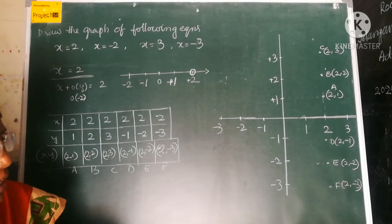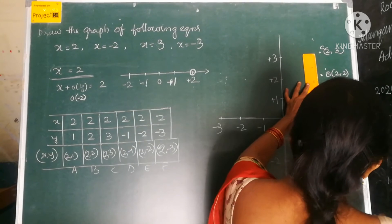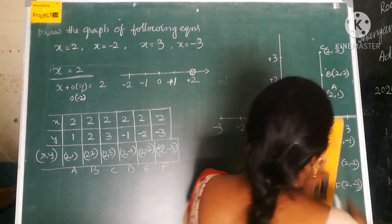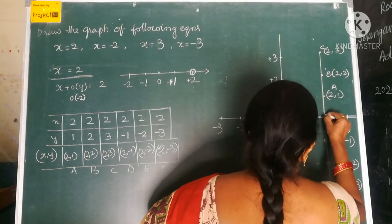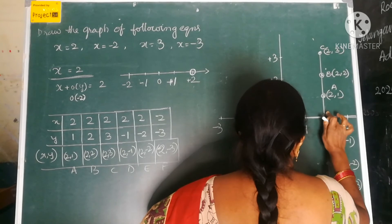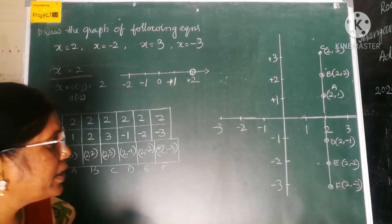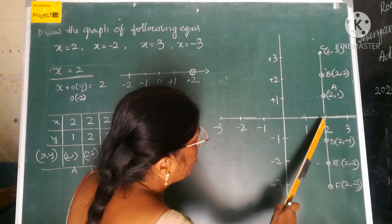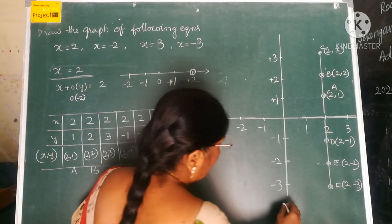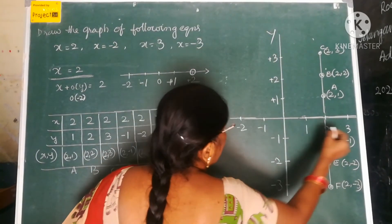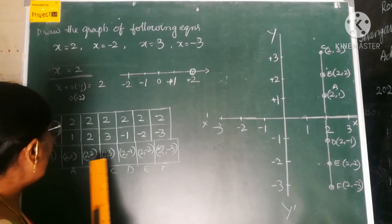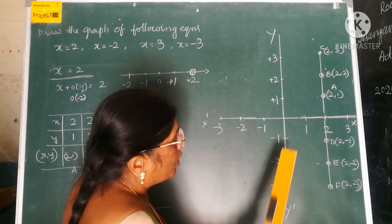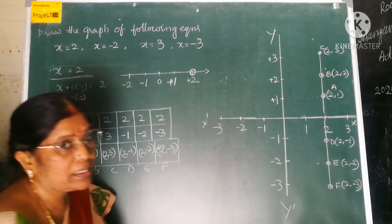If you join all these points, and observe, all these points A, B, C, D, E, F are in a straight line. These points are all in a line which is 2 units away from the Y-axis.